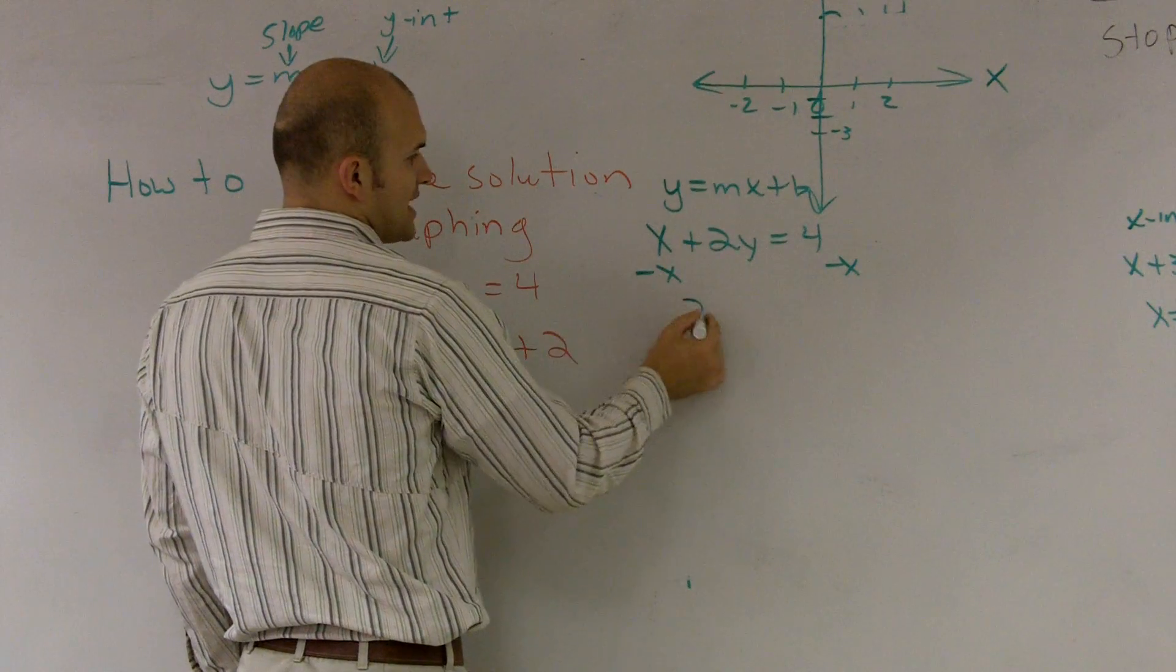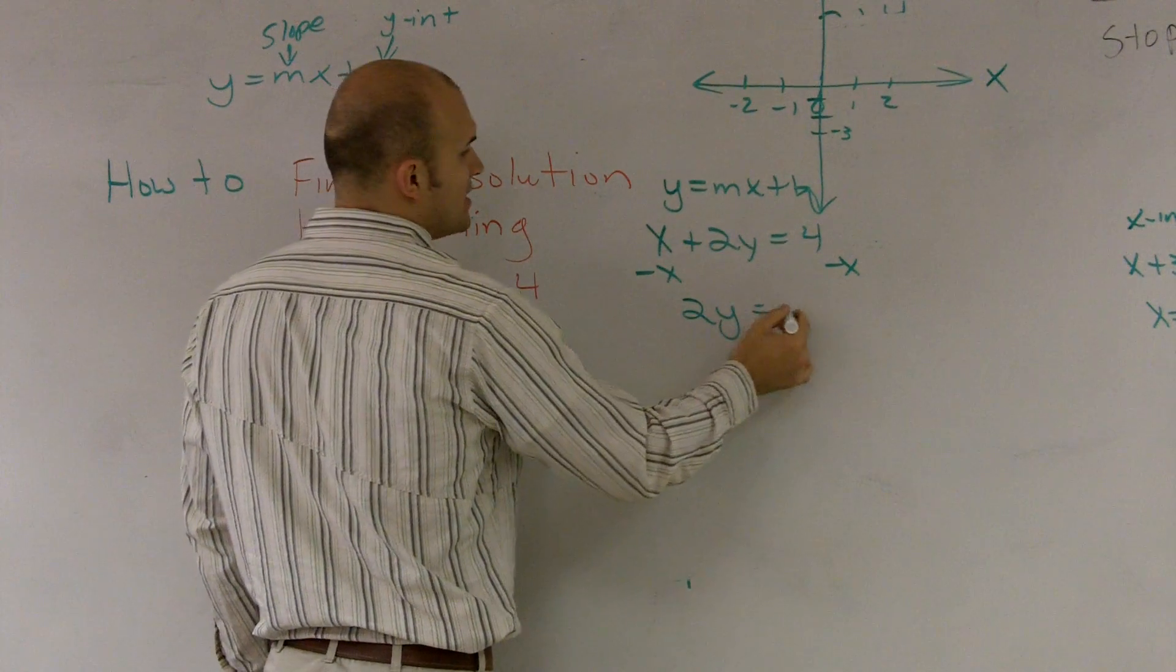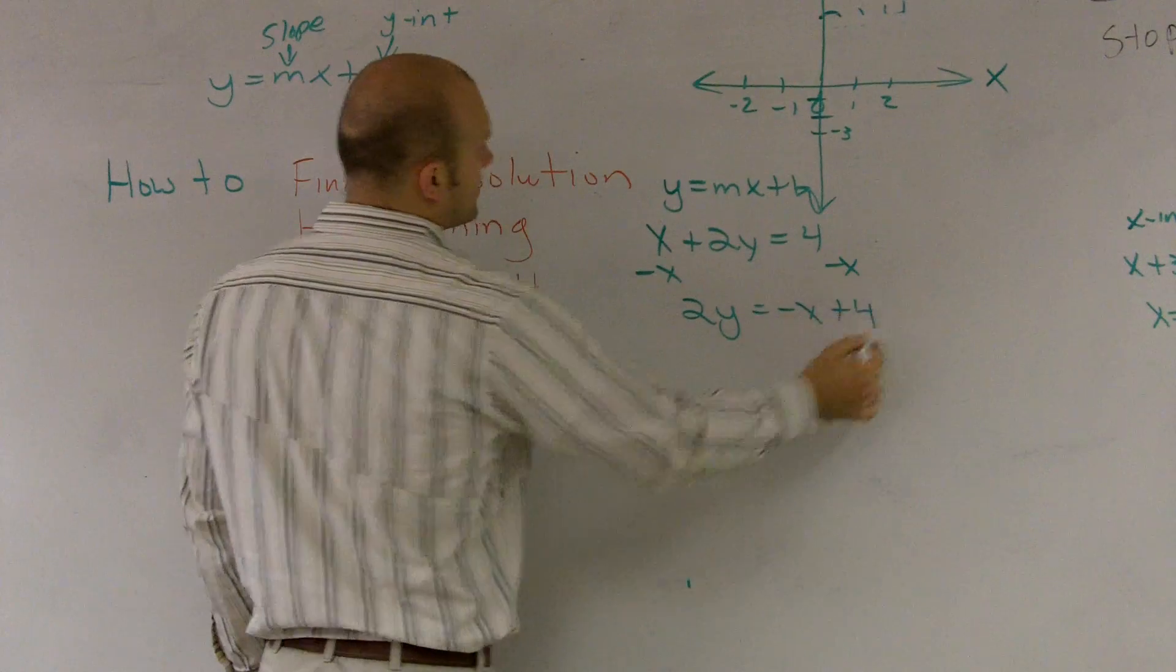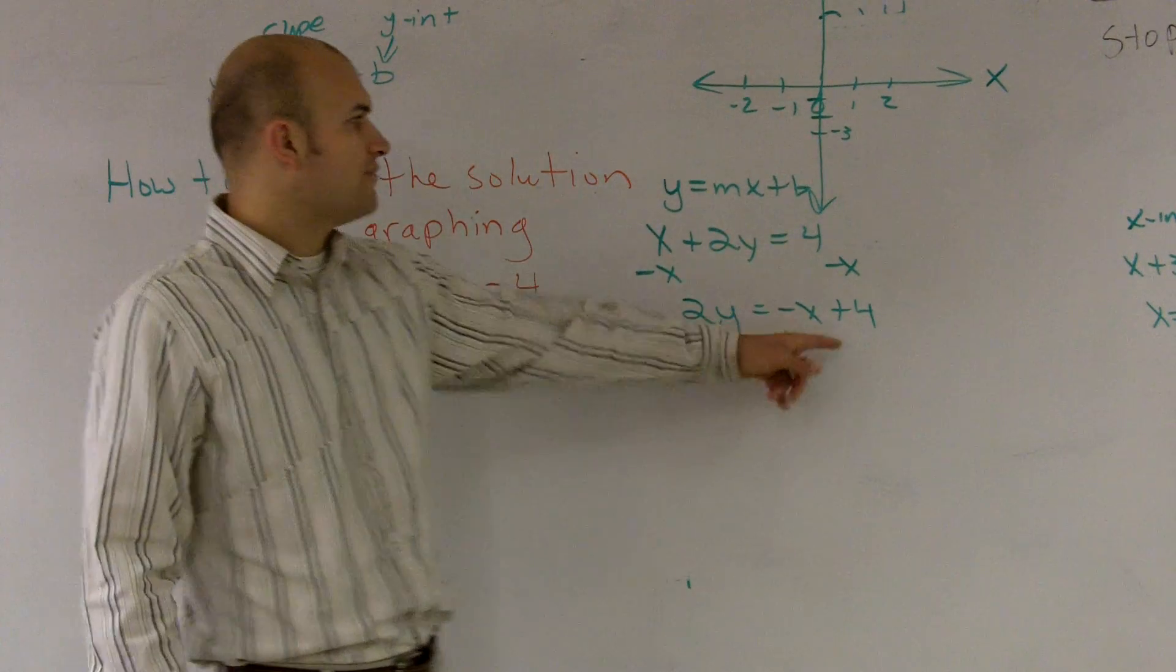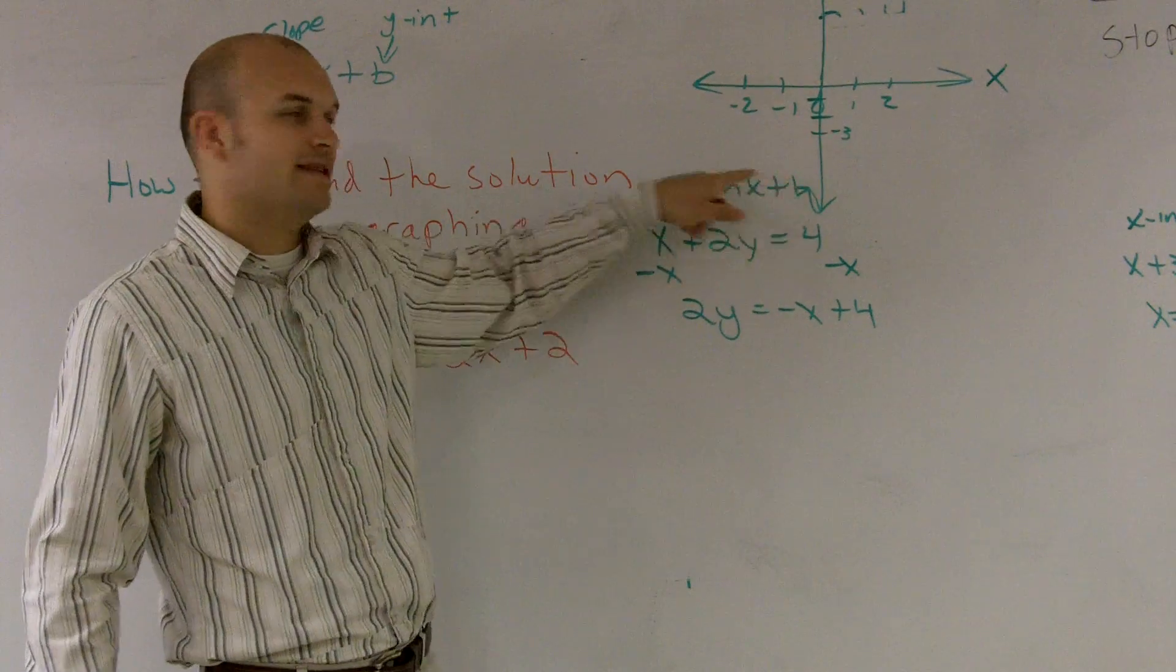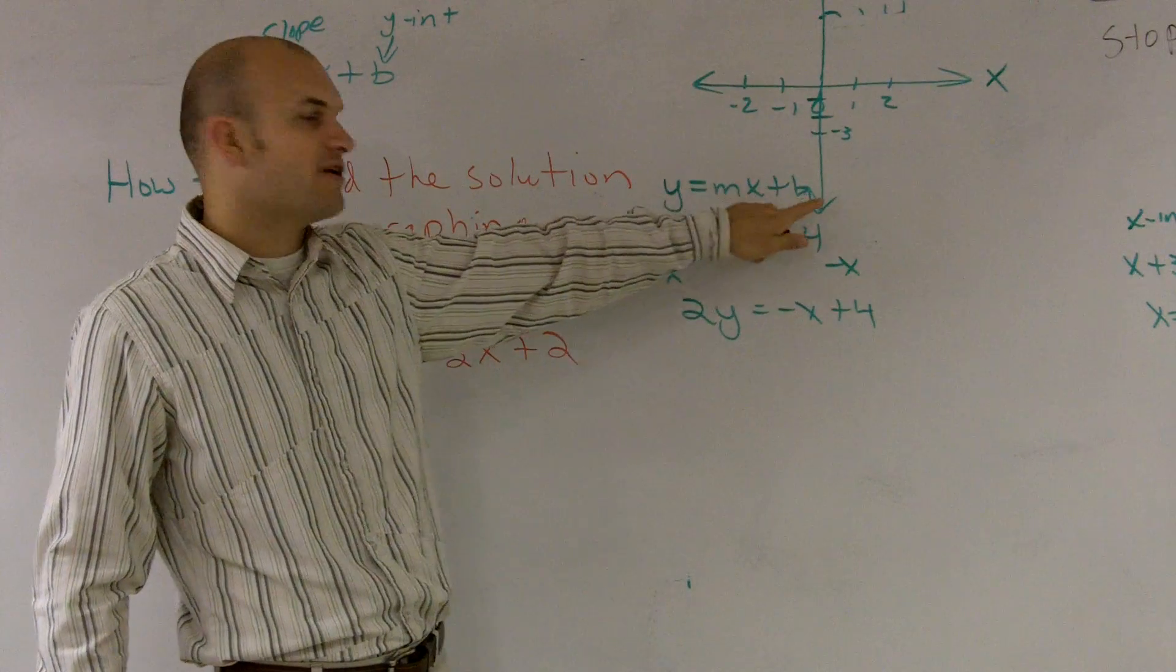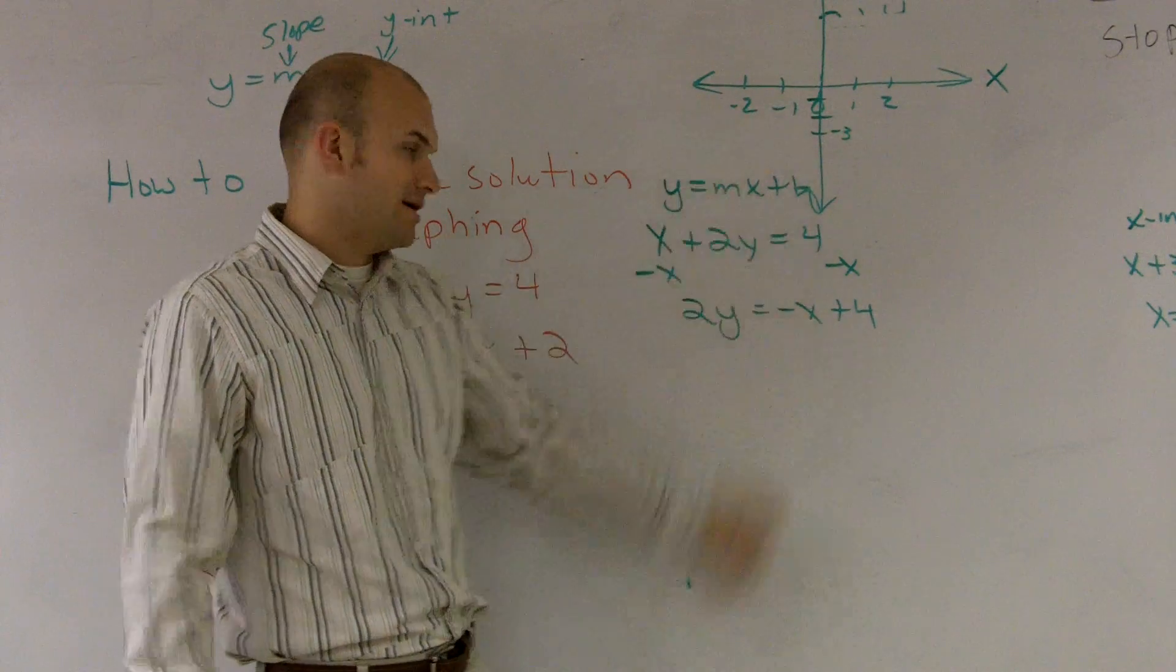So I'm going to subtract the x on both sides, so I obtain 2y equals negative x plus 4. And the reason why I write the x in front of the 4 is because I want it to look like in this form. I always want the x's in front of your b, and your b is your y intercept.